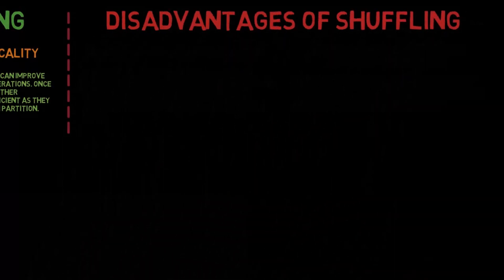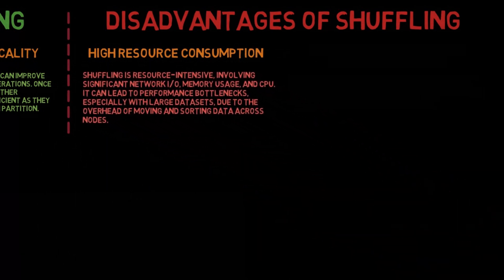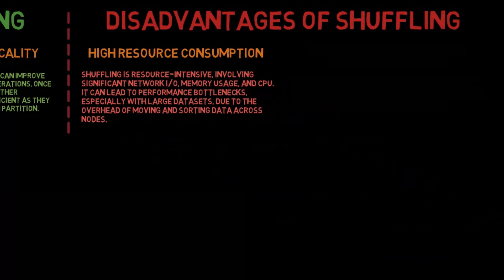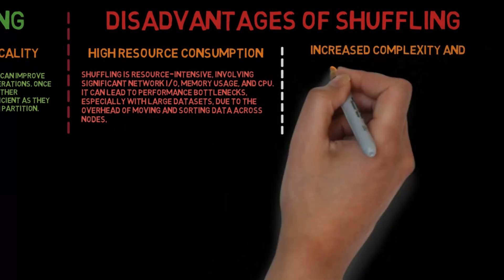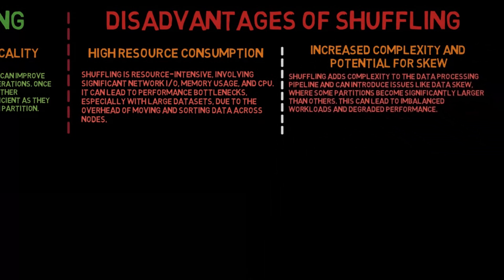On the disadvantages side, shuffling has high resource consumption — it is resource intensive, involving significant network I/O, memory usage, and CPU, and can lead to performance bottlenecks especially with large datasets due to the overhead of moving and sorting data across nodes. Shuffling also increases complexity and has the potential for skew, where some partitions become significantly larger than others, leading to imbalanced workloads and degraded performance.